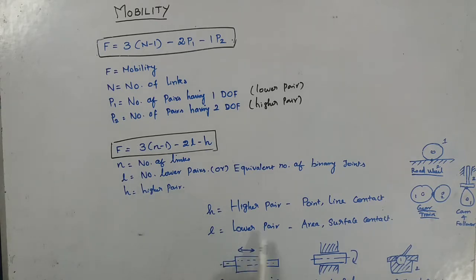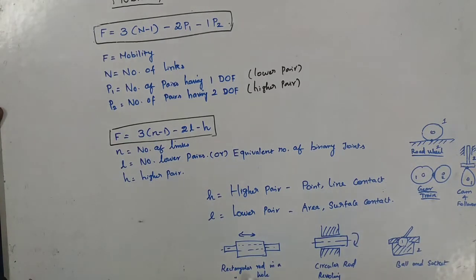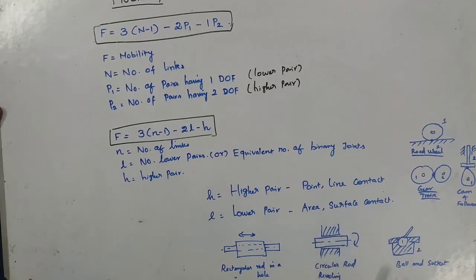A lower pair is when two members have surface or area contact between them. Examples include a rectangular rod in a rectangular hole (area contact), a circular rod revolving in a bearing (surface contact), and a ball-and-socket joint (surface contact). These are the best examples of lower pairs.